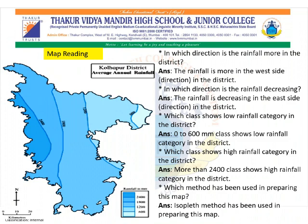In the index, we can see the highest value of rainfall is 2,400 mm, whereas the lowest is 600 mm. We will do the map reading for Kolhapur district average annual rainfall. In which direction is the rainfall more in the district? The rainfall is more in the west side direction. In which direction is the rainfall decreasing? The rainfall is decreasing in the east side direction. Which class shows the low rainfall category in the district? The low rainfall category is shown by the 0 to 600 mm class. In the index, where 600 is written, a very light shade is given, indicating the rainfall is very low.